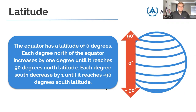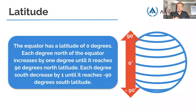The equator has latitude at zero degrees — it cuts the globe in half. Each degree north of the equator increases by one until it reaches 90 degrees north latitude. Each degree south decreases by one until it reaches negative 90 degrees south latitude. Every single rung is one degree until you get to the north pole at 90°. You can think of it as creating an angle through the core of the earth — zero at the equator to 90° at the pole is a right angle.